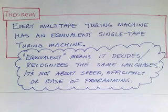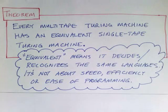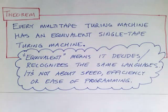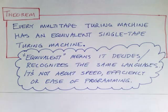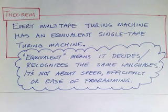Here is the main result: every multi-tape Turing machine has an equivalent single tape Turing machine. By equivalent I mean that it decides or recognizes the same languages. It's not about speed, efficiency, or ease of programming — it's just about whether the class of languages that can be recognized is different. And the answer is no. Having a Turing machine that can operate on several tapes at once gives us no additional power.